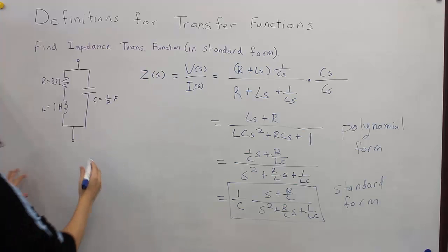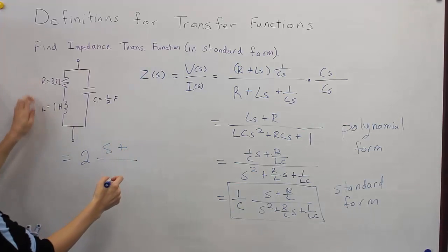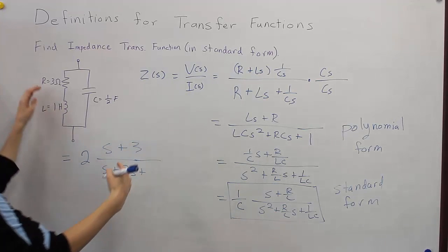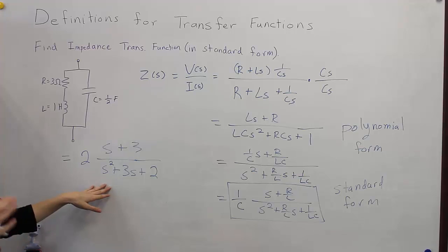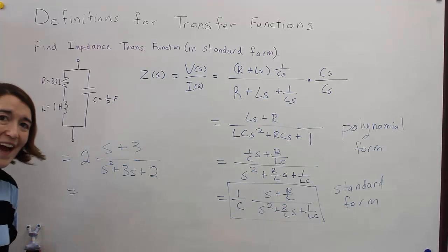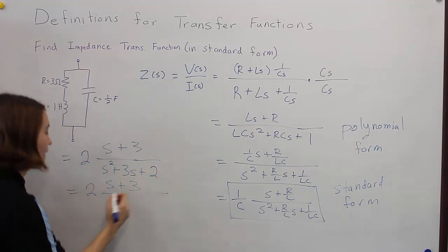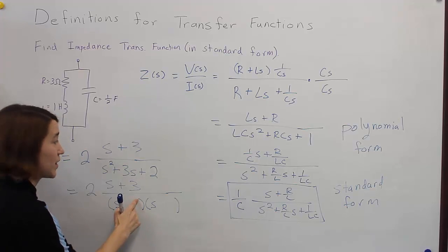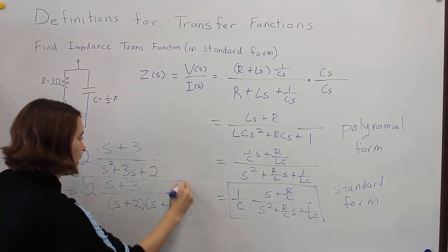If we insert the numerical values, we get 2 multiplied by S plus 3, divided by S squared plus 3S plus 2. This is our numerical answer in standard form. In the future we'll also work with factored form, where we factor everything so that we have a product of terms like S plus or minus some value. In this case, the denominator factors into S plus 2 times S plus 1.